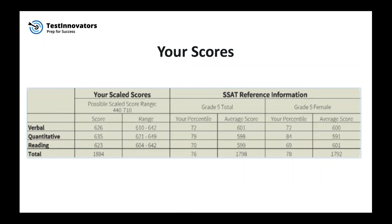Now let's look at the scores. In this section, you can see all the information to determine how well you scored on the test. The first part is the scaled scores, which differ across all levels. On the elementary SSAT, scaled scores range from 300 to 600 with a total scale score range of 900 to 1800. For the middle level SSAT, section scaled scores range from 440 to 710 with a total scaled score range of 1320 to 2190. On the upper level SSAT, scaled scores range from 500 to 800 with a total score range of 1500 to 2400.